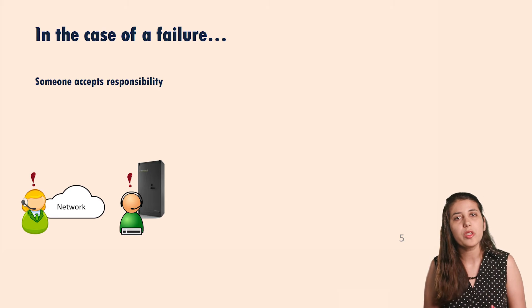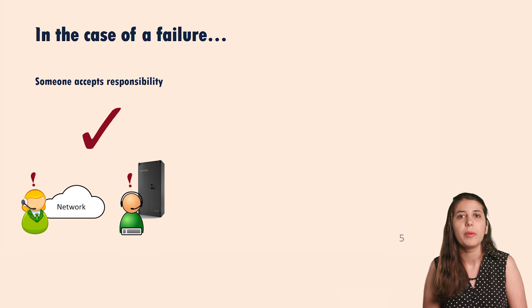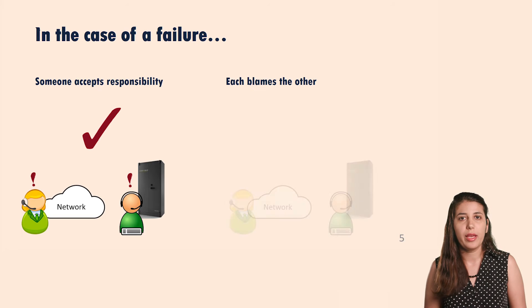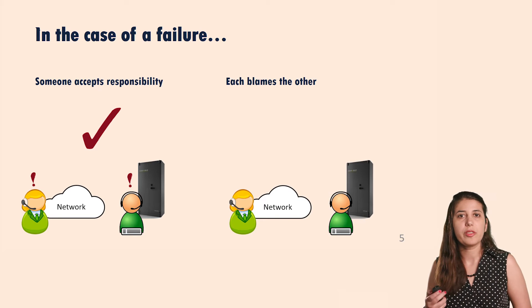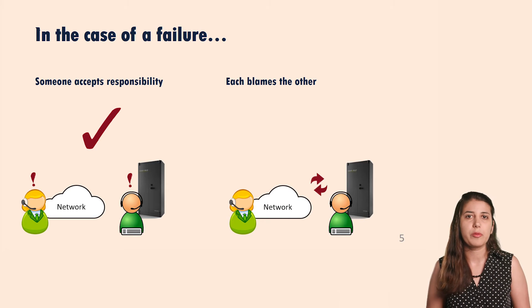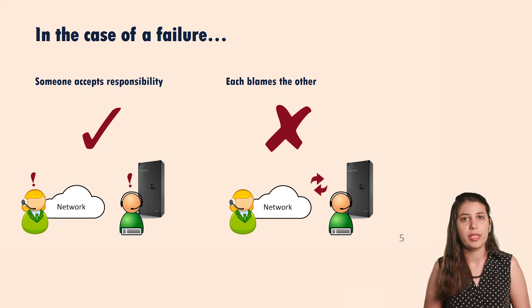This is a good scenario, because someone is accepting responsibility for the problem and therefore they can fix it. The bad thing happens when we have the network blame the service, the service blame the network, and no one really accepts responsibility for the failure. There's a back and forth that goes on, and the failure never gets resolved.